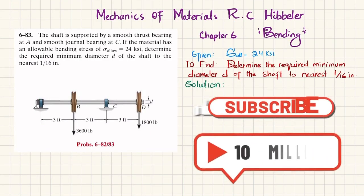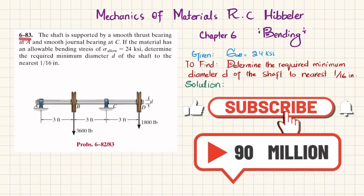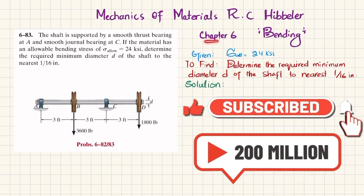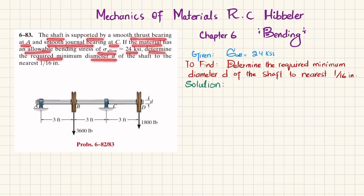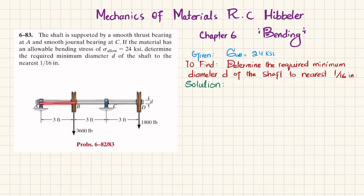Welcome back. In this video we are going to solve problem 6-83, taken from chapter 6 on bending. The book is Mechanics of Materials by RC Hibbeler. The statement is: the shaft is supported by a smooth thrust bearing at A and a smooth journal bearing at C. If the material has an allowable bending stress of 24 ksi, determine the required minimum diameter of the shaft to the nearest 1/16 inch.